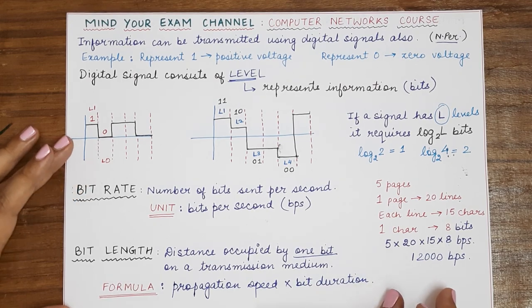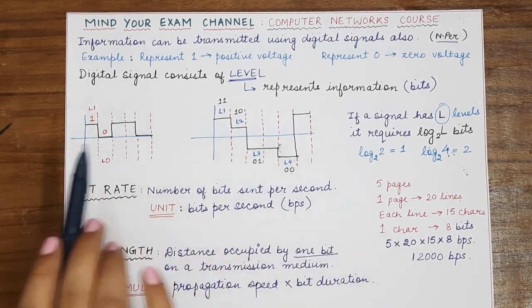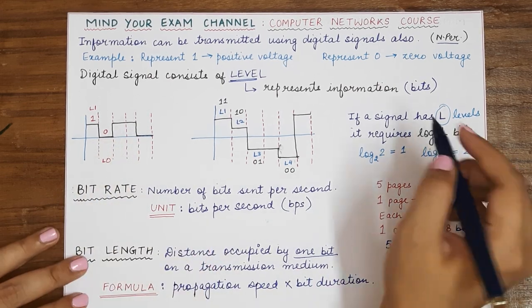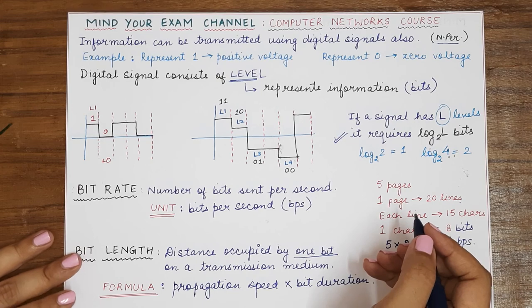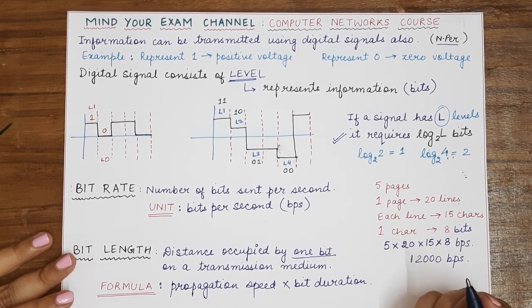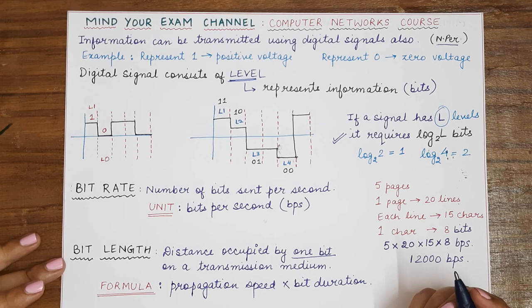So this was the concept of bit length and bit rate. When we are dealing with digital signals, you need to keep these concepts in mind, especially this particular formula that how many levels govern how many bits are present in that particular signal. So that's all for today's video. I hope you have understood these concepts.